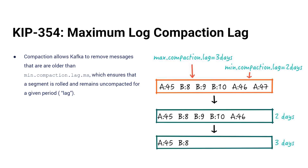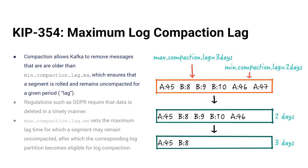Maximum log compaction time. You've always been able to set a minimum log compaction time — that's an amount of time a log segment is guaranteed to stick around before it's compacted, like the minimum time a key will survive compaction. Max log compaction time lets you set the maximum amount of time you want a log segment to hang around. This is good for GDPR compliance: if there's a certain amount of time by which you need a key to be deleted, this makes sure it gets compacted within that period.